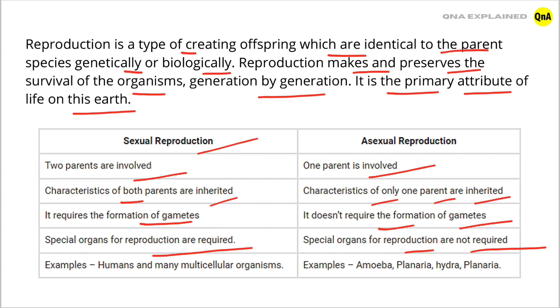In sexual reproduction, examples are humans and many multicellular organisms. While in asexual reproduction, examples are amoeba, planaria, and hydra.